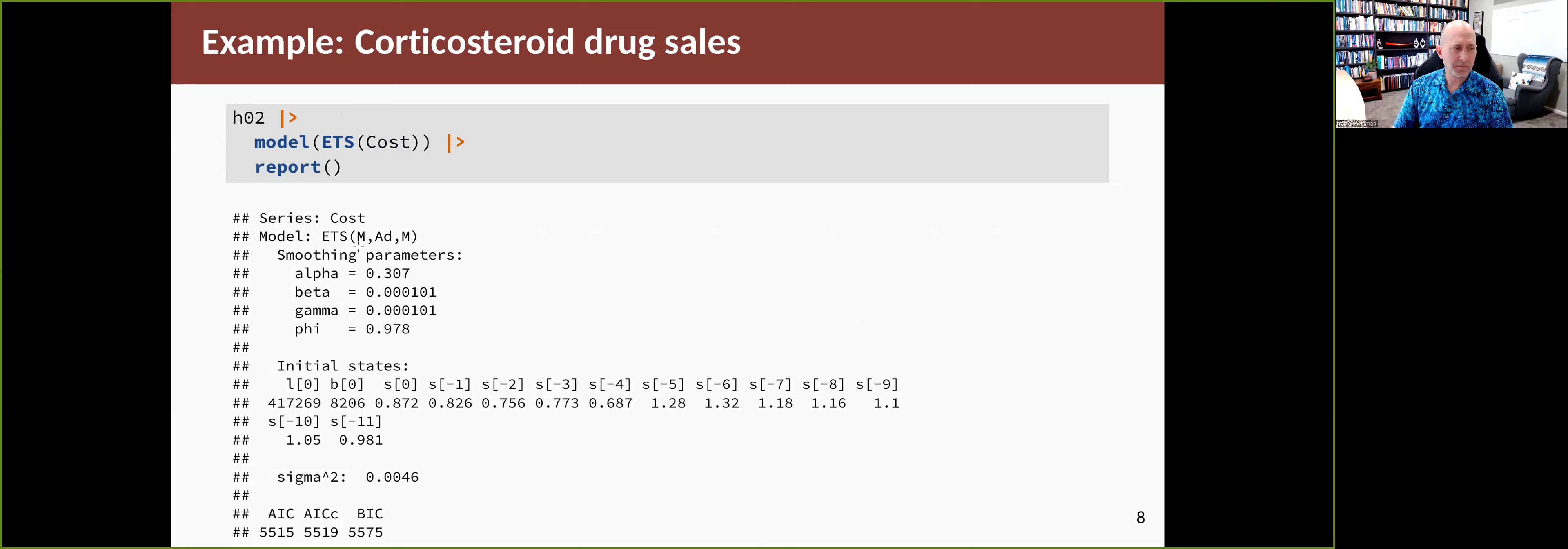If we just ask Fable to give us an ETS model, it comes back saying here's a multiplicative error, additive damped trend, and multiplicative seasonality model. Here are the smoothing parameters and the states. Notice in passing that two of the smoothing parameters are very small—beta and gamma are almost equal to zero. That tells us that the slope is not changing much over time, hardly changing at all, so essentially you've got a linear trend going through the model.